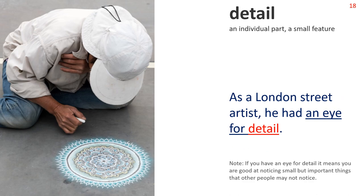Detail — an individual part, a small feature. As a London street artist, he had an eye for detail. Note: if you have an eye for detail, it means you are good at noticing small but important things that other people may not notice.